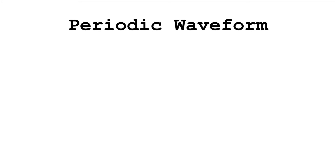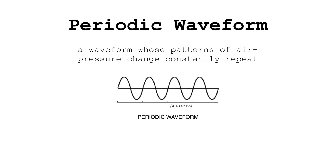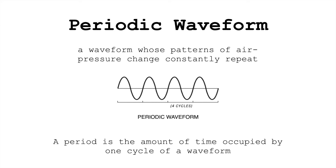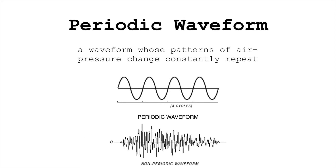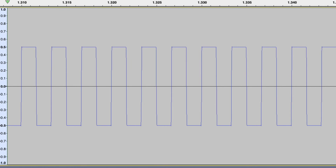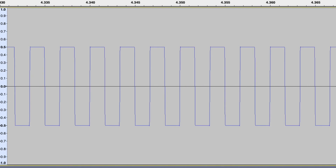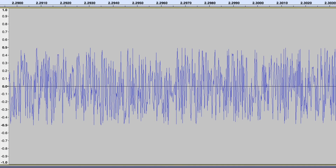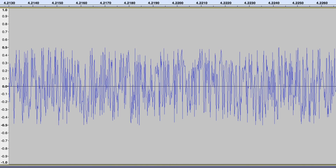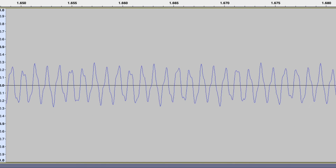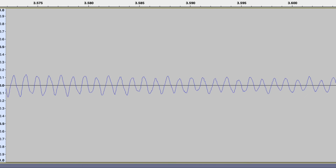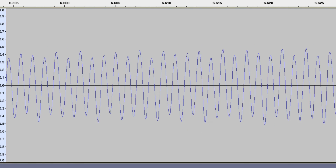A periodic waveform is a waveform whose patterns of air pressure constantly repeat. A period is the amount of time occupied by one cycle of a waveform. It's useful, especially in creating sound, to understand if a waveform is periodic or not, because periodic waveforms tend to have a perceptible pitch, whereas non-periodic waveforms like noise won't. Naturally occurring sounds tend to be a combination of both periodic and non-periodic components.